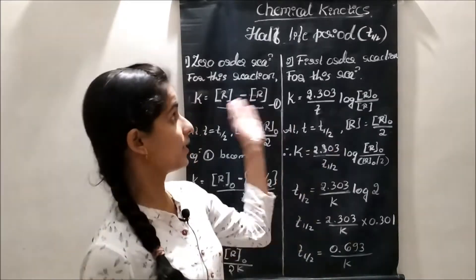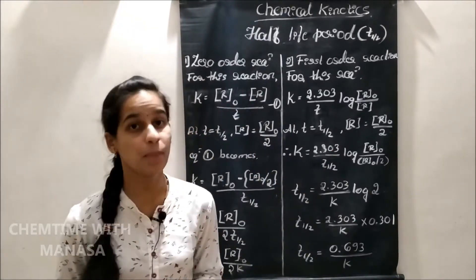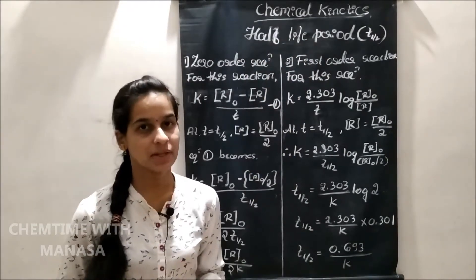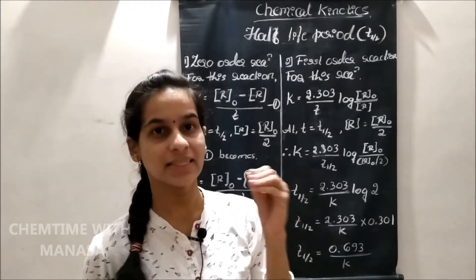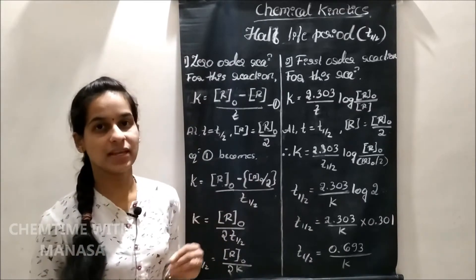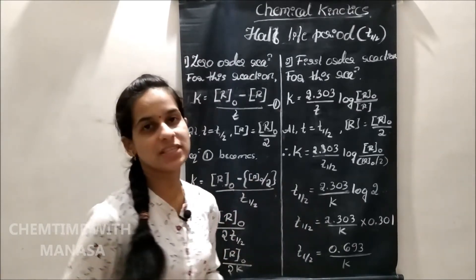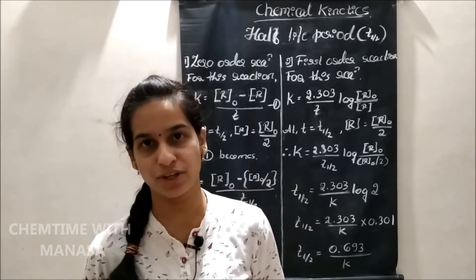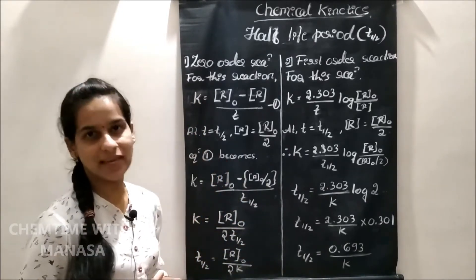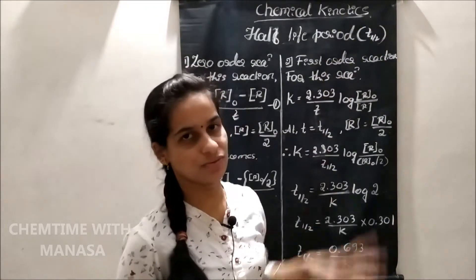Friends, from the chemical kinetics chapter, another important concept is half-life period. Half-life period means the time in which the concentration of the reactant is reduced to half of its initial concentration. This is called the half-life period of that reaction and it is denoted as T half.